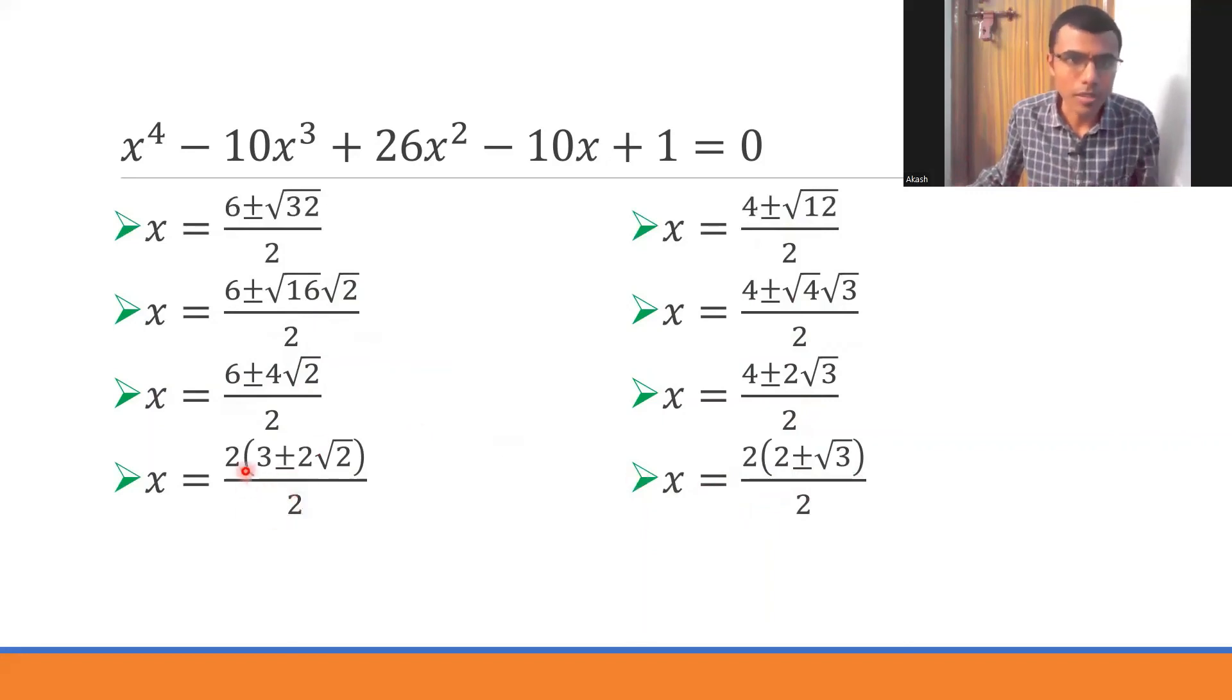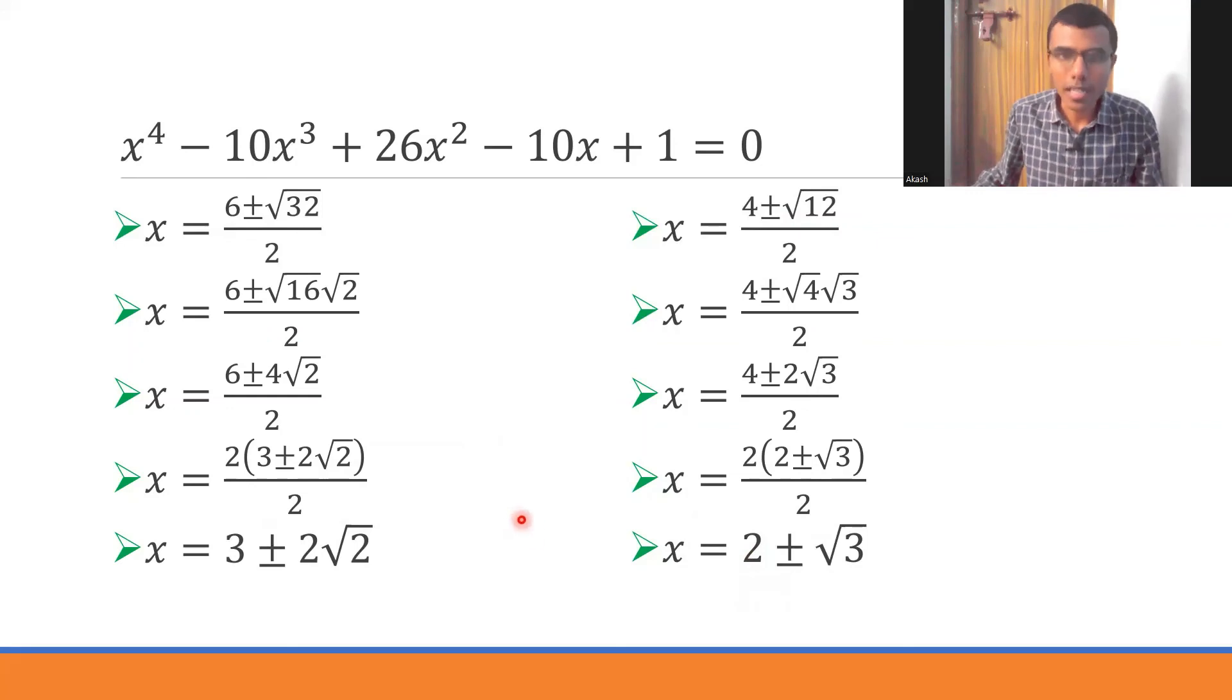Obviously the denominator is there. Now this 2, this 2 would get cancelled. This 2, this 2 would get cancelled. x is nothing but 3 ± 2√2. And here x is nothing but 2 ± √3. Therefore ultimately I'd be getting this.